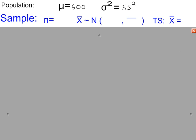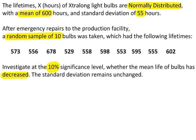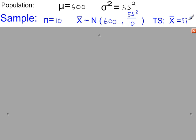The population mean is 600. The standard deviation was 55, so the variance will be 55 squared. The sample size is 10. The sample mean follows the normal distribution. So we can replace these values with the ones we have: 600 for the population mean, sigma squared is 55 squared, and n is 10. The sample mean can be calculated from the data given and works out to be 579.7. This will be our test value.